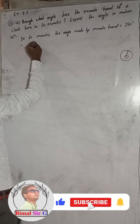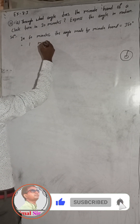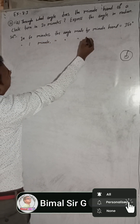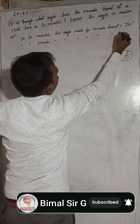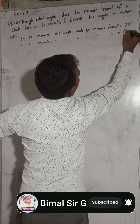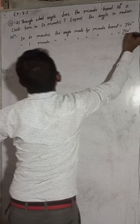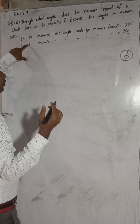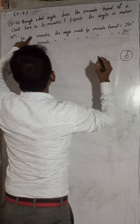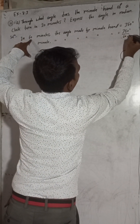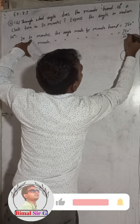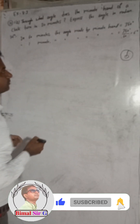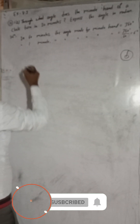By unitary method, in one minute the angle made by the minute hand is equal to 360 degrees divided by 60. Why divide? Because in one minute it will make less degrees, so for less we have to divide by 60. So this will be 6 degrees.